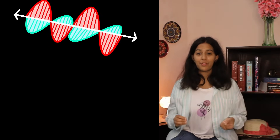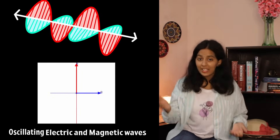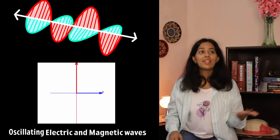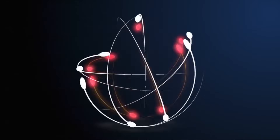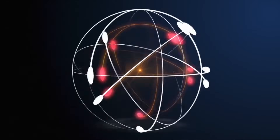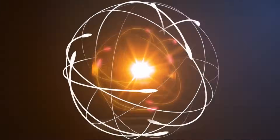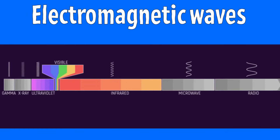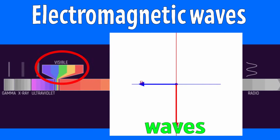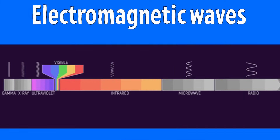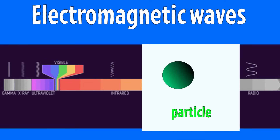Electromagnetic — the name reveals it: electric plus magnetic waves together. Electromagnetic waves are oscillating electric and magnetic fields in 3D space. In physics, we have a well-known chart of EM waves. Even light of different colors, which lets you see things, is also oscillating electric and magnetic waves, although it also acts like a particle.